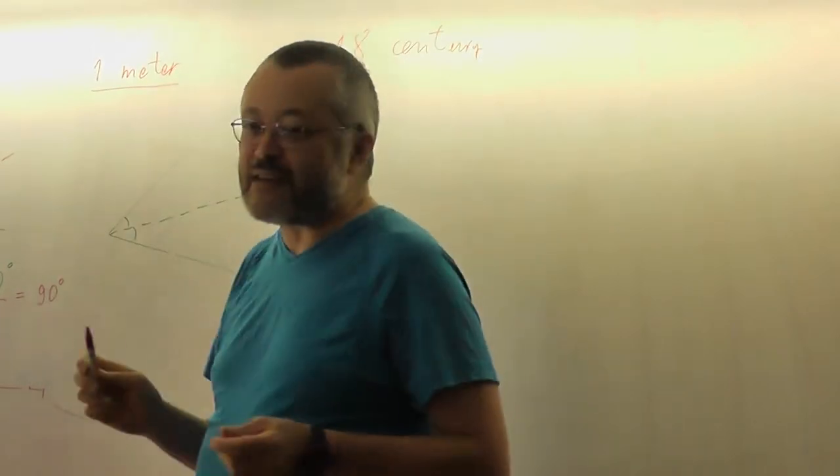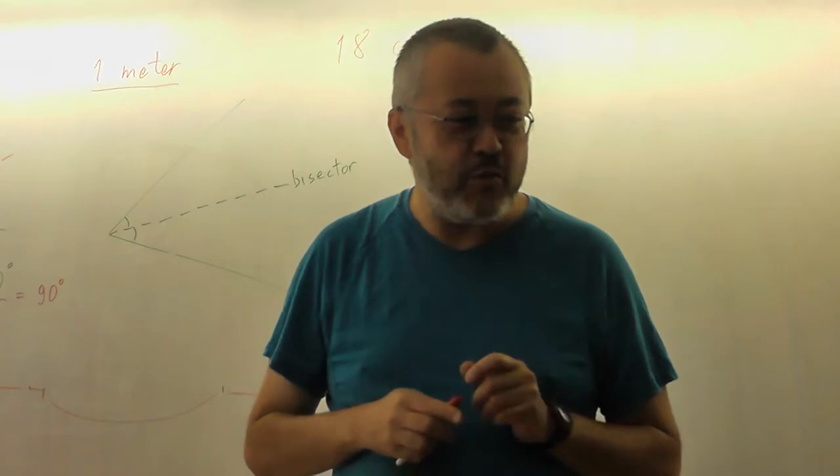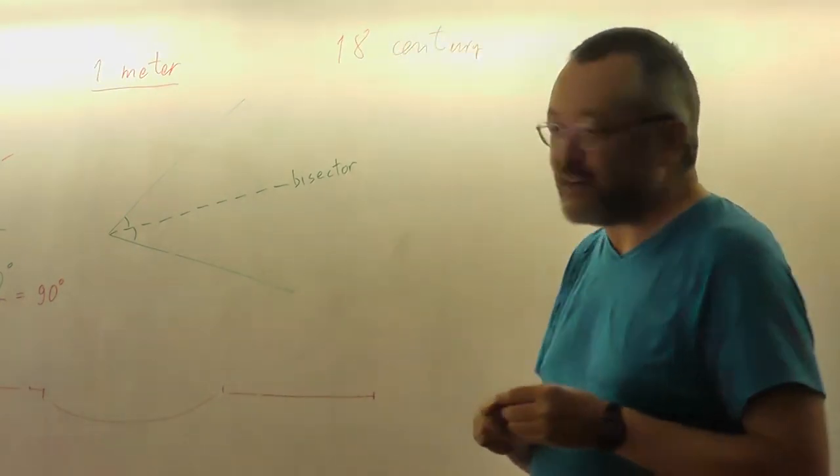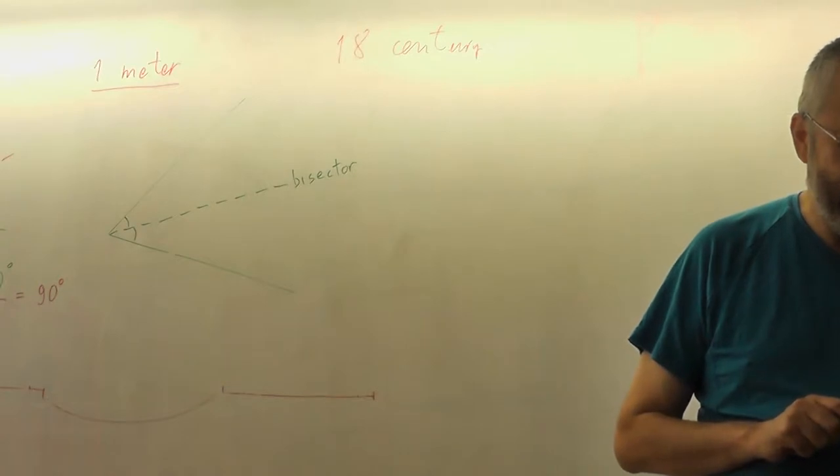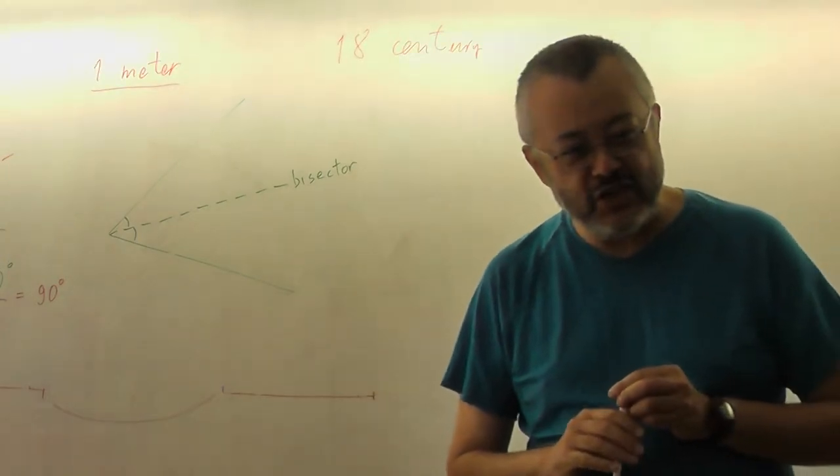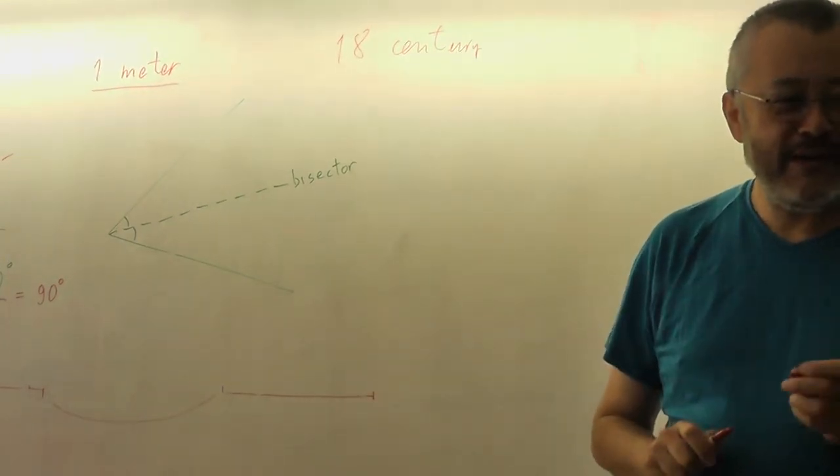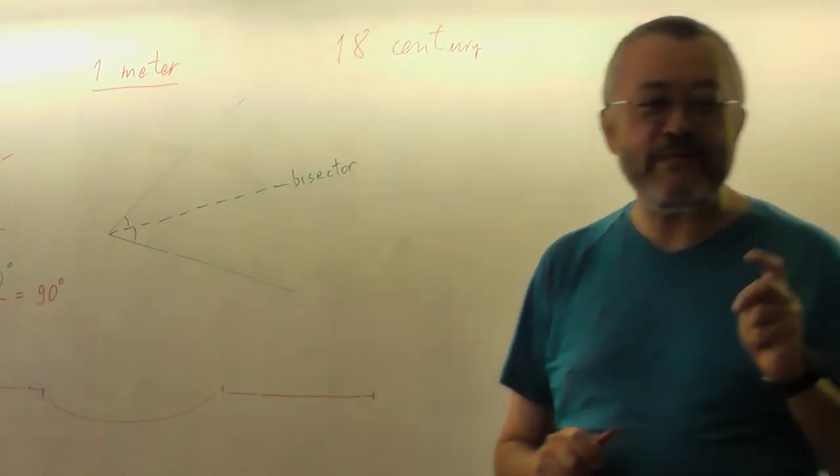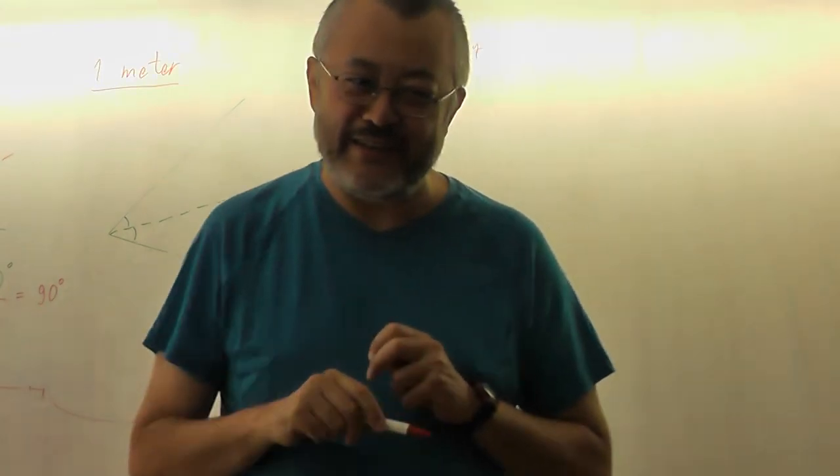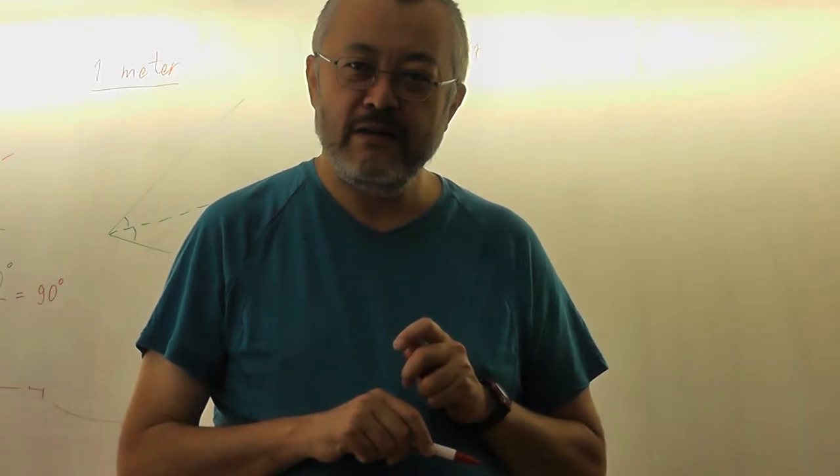So they decided they could invent a new unit, one meter, and they wanted to define it in some special way. So what is this way? How, what is one meter according to French Revolution?